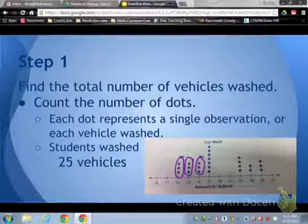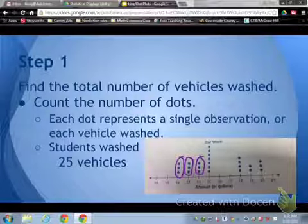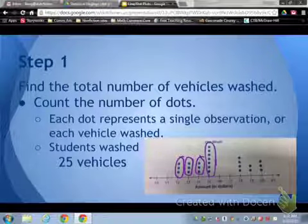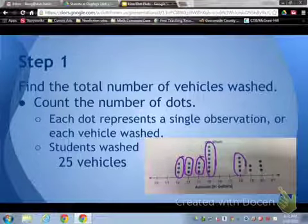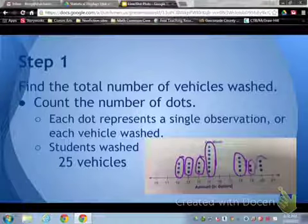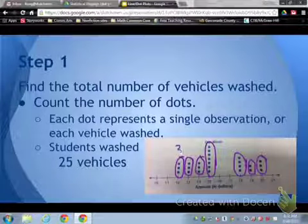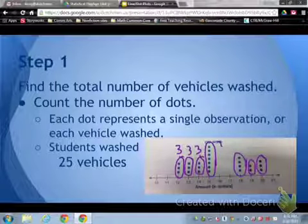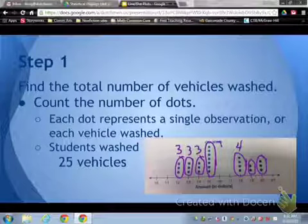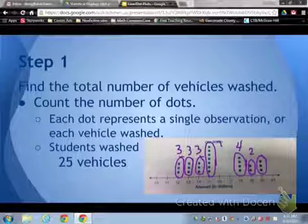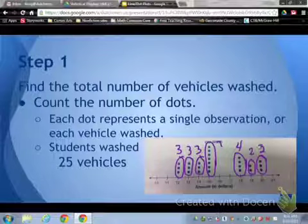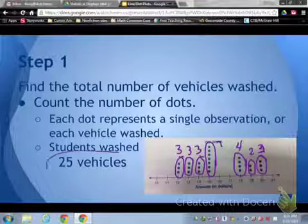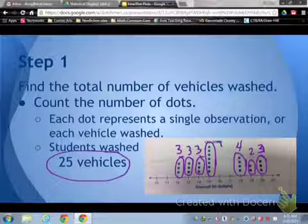Then we have one, two, three, four, five, six, seven here. Four here, two here, and three here. So three, six, nine plus seven is 16, plus four is 20, 22, and 25. So we have a total of 25 vehicles.